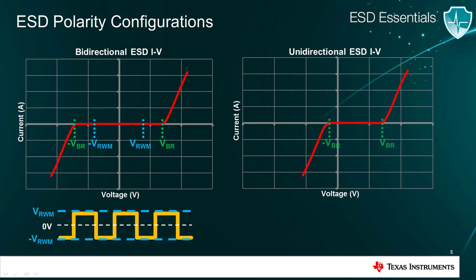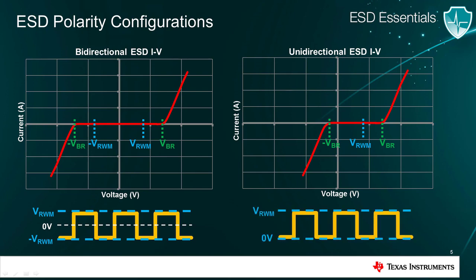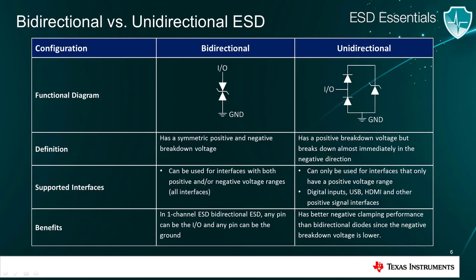On the other hand, unidirectional diodes are not symmetric and break down for almost any negative voltage. As a result, unidirectional diodes only support positive voltage signals between zero and VRWM. However, unidirectional diodes usually offer better negative ESD protection and clamping voltages. In summary, both bidirectional and unidirectional diodes protect against positive and negative ESD strikes. However, bidirectional ESD diodes have a positive and negative breakdown voltage, so they can support all signals within their working voltage range. Unidirectional diodes can only support interfaces that have a positive voltage range, such as USB, HDMI, and other digital inputs, but the benefit is that they offer better negative ESD protection.